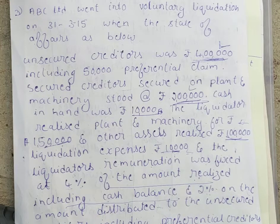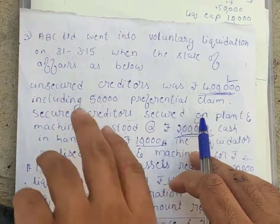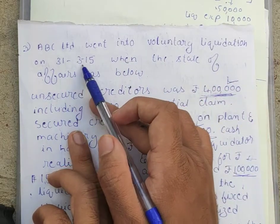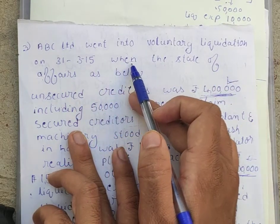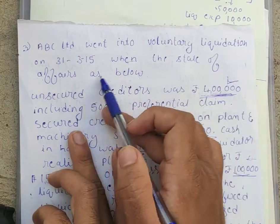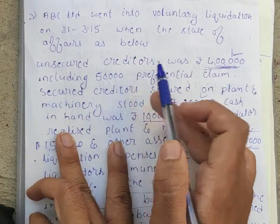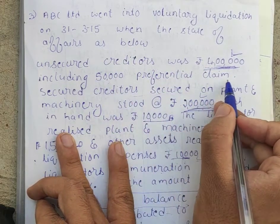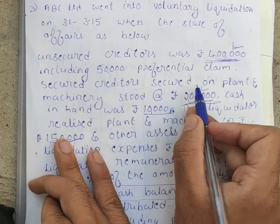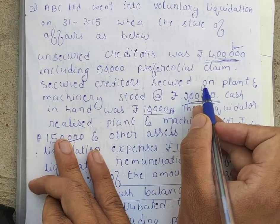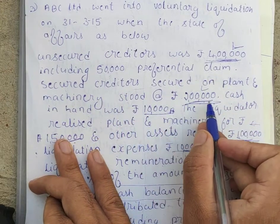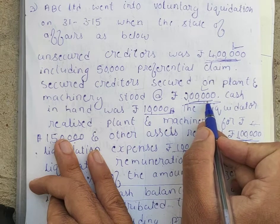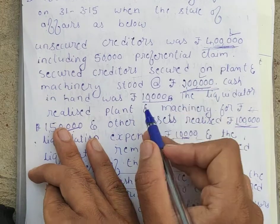To understand liquidation properly: ABC Limited went into voluntary liquidation on 31st March 2015. The state of affairs was as follows — unsecured creditors stood at rupees 4 lakh, including 50,000 preferential claims. Secured creditors on plant and machinery stood at 2 lakhs, which is a liability. These creditors are secured against plant and machinery worth 2 lakhs.